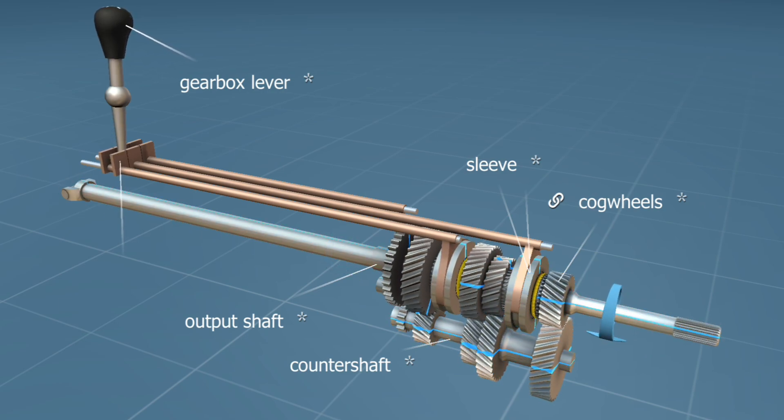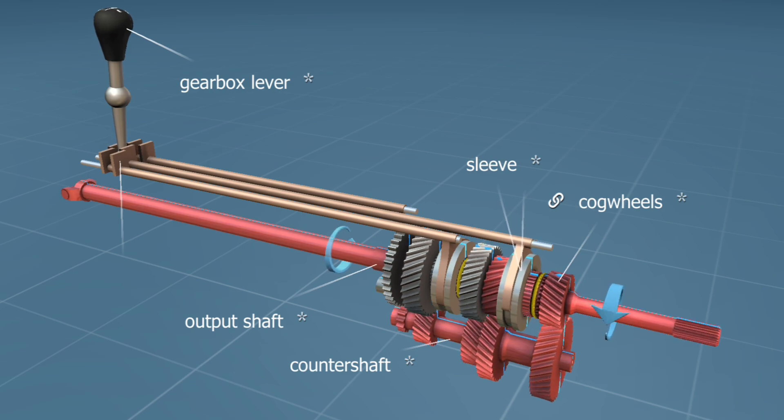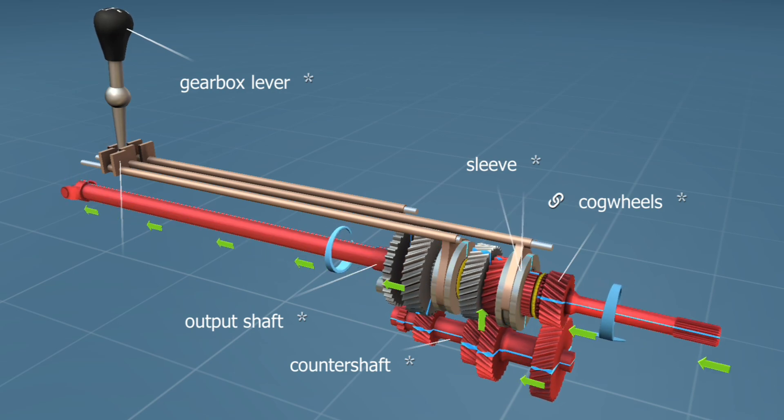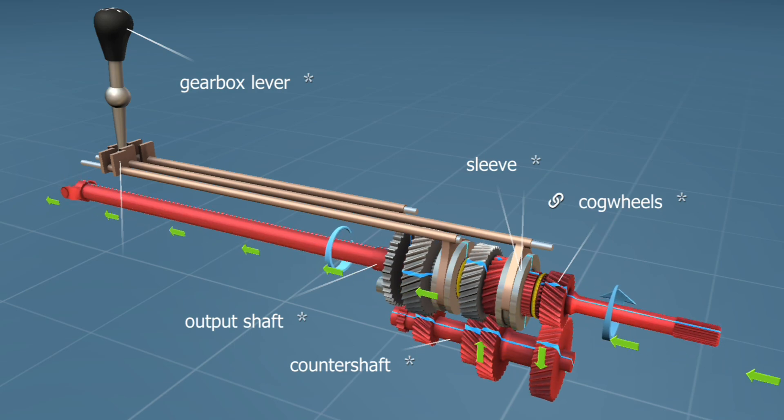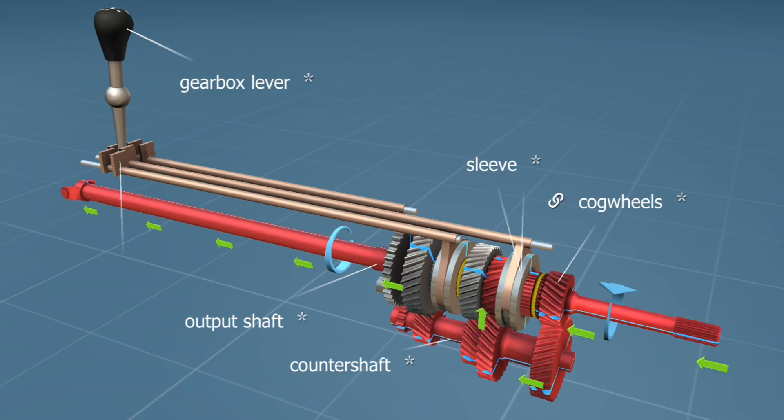In third gear, the sleeve fixes the third gear to the shaft. The drive goes through the third gear on the lay shaft and the third gear on the spline shaft. The speed is increased while the torque is being lowered.